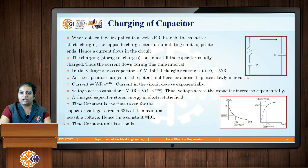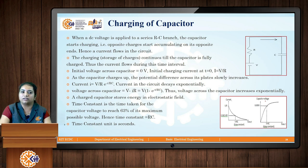The voltage across the capacitor is calculated as the total voltage minus the voltage drop across the resistor (I times R), giving Vc equals V times (1 minus e raised to minus t over RC) — the capacitor voltage increases exponentially. When fully charged, the capacitor stores energy in the form of an electric field and acts as a constant voltage source even if the supply is removed. The time constant tau, defined as T equals RC, is the time taken for the capacitor voltage to reach approximately 63 percent of its maximum possible voltage, and its unit is seconds.